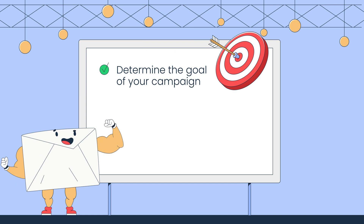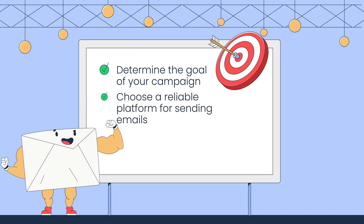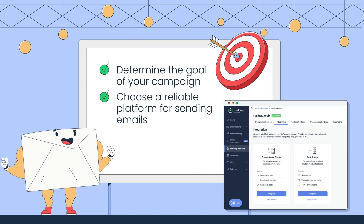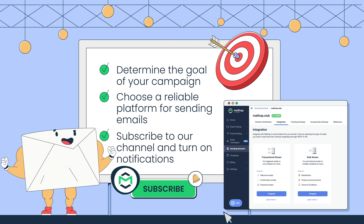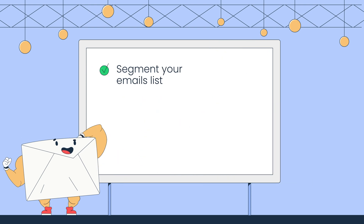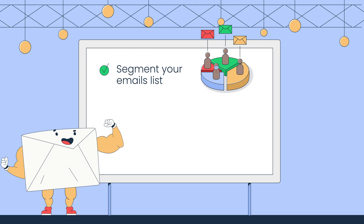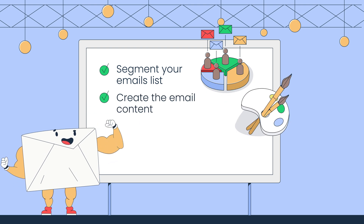1. Determine the goal of your campaign. 2. Choose a reliable platform for sending emails, preferably with a separate stream for bulk emails. 3. Subscribe to our channel and turn on notifications to learn all about email deliverability. 4. Segment your email list based on demographics, buying behavior, location, etc. 5. Create the content with catchy subject lines, appealing visuals, and straight-to-the-point copies.